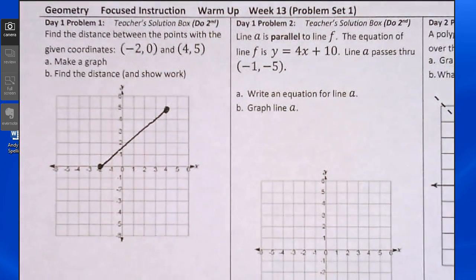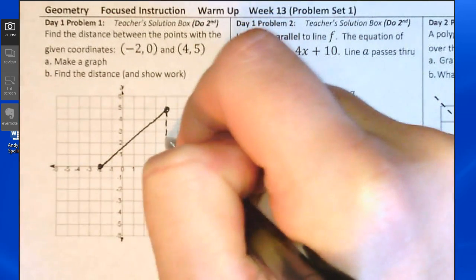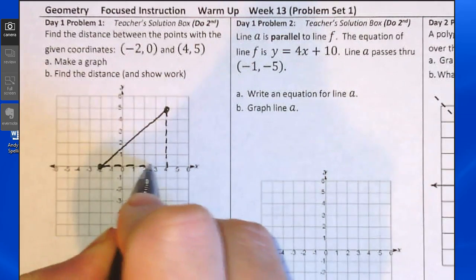One way to find the distance between dots is with the Pythagorean Theorem. Draw down from the first dot, draw to the right from the other dot to create a right triangle.